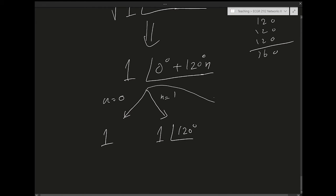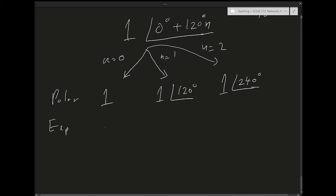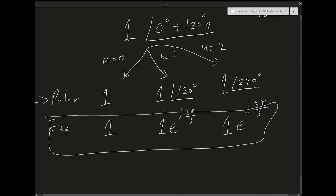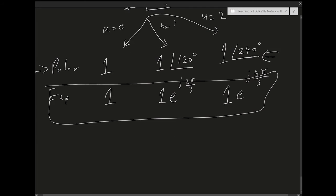The three cubic roots of unity are: n=0 → 1∠0° = 1; n=1 → 1∠120°; n=2 → 1∠240°. In exponential form: 1, e^(j2π/3), and e^(j4π/3). For n=3 you cycle back to the same numbers, so we stop after three roots.